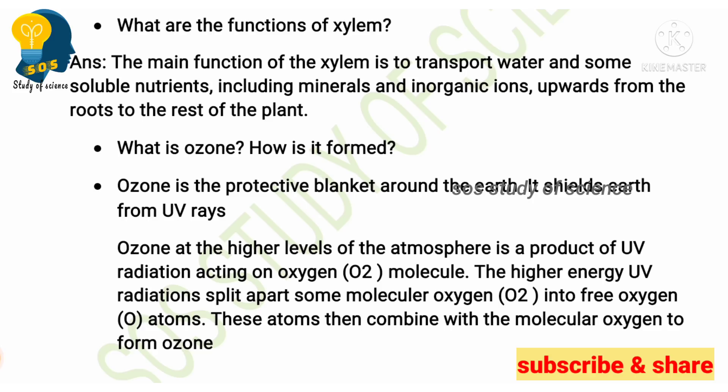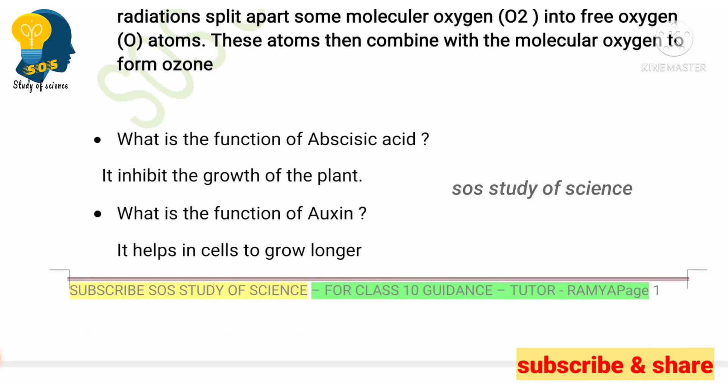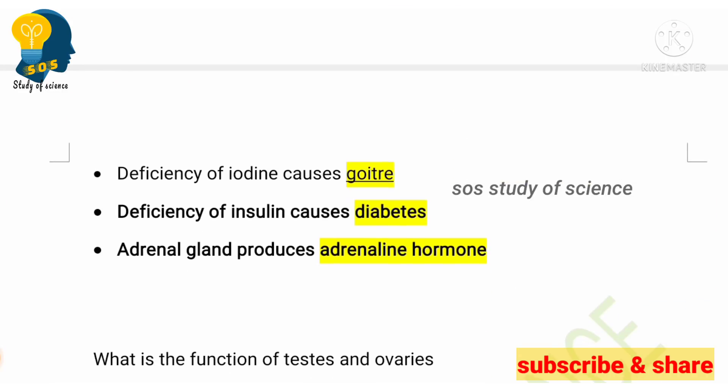This answer is very important — do not miss these questions, students. Practice them well. Next question: what is the function of abscisic acid? Abscisic acid inhibits the growth of the plant. Next: what is the function of auxin? Auxin helps the cells to grow longer. Plant hormones are very important — 100% they will come in the exam.